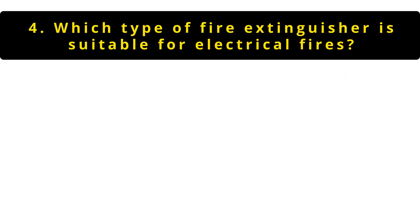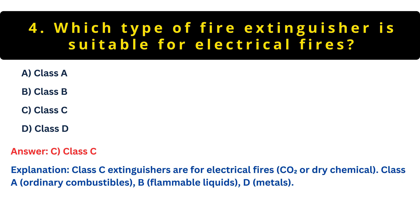Question 4: Which type of fire extinguisher is suitable for electrical fires? Option A: Class A. Option B: Class B. Option C: Class C. Option D: Class D. The correct choice is C — Class C. Class C extinguishers are designed for electrical fires, using CO2 or dry chemical agents to safely put out fires involving live equipment. Remember, Class A is for ordinary combustibles, Class B for flammable liquids, and Class D for metals.